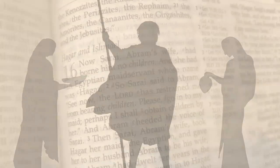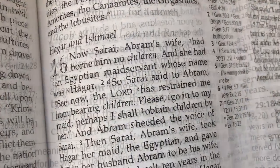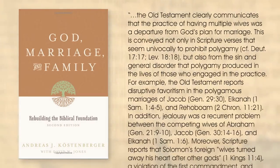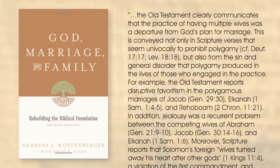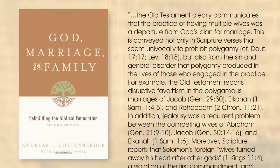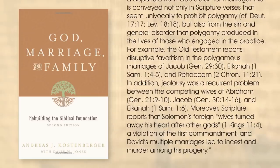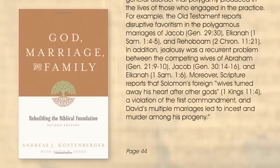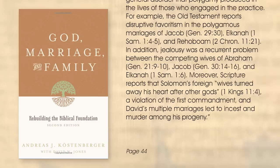Lamech also begins another practice detested by God: polygamy. Like primogeniture, any time polygamy shows up in the book of Genesis it is portrayed in a negative light that brings more pain and suffering onto the family. The Old Testament clearly communicates that the practice of having multiple wives was a departure from God's plan for marriage. This is conveyed not only in scripture verses that seem univocally to prohibit polygamy, but also from the sin and general disorder that polygamy produced. For example, the Old Testament reports disruptive favoritism in the polygamous marriages of Jacob, Elkanah, and Rehoboam. Jealousy was a recurrent problem between the competing wives of Abraham, Jacob, and Elkanah. Moreover, scripture reports that Solomon's foreign wives turned away his heart after other gods — a violation of the first commandment — and David's multiple marriages led to incest and murder among his progeny.